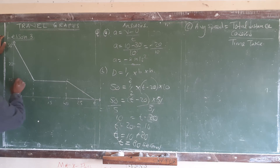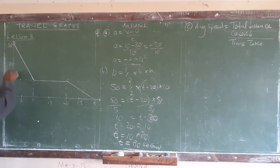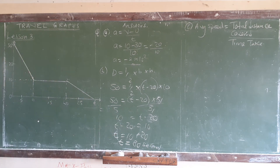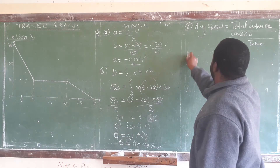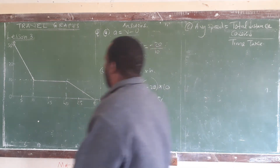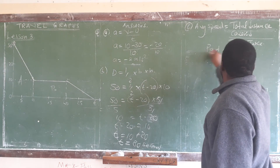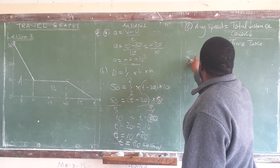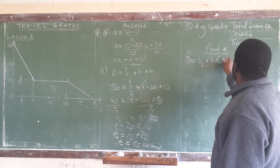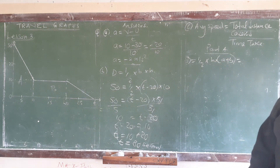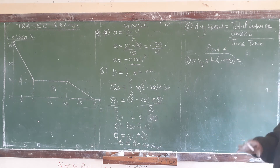We can identify shapes — maybe four shapes — and apply the trapezoid formula. Let me split this into Part A and Part B. For Part A, the distance formula for a trapezoid is: distance equals half times height times (a plus b). We check the graph and can see two parallel lines — the line joining them at the bottom is our height.